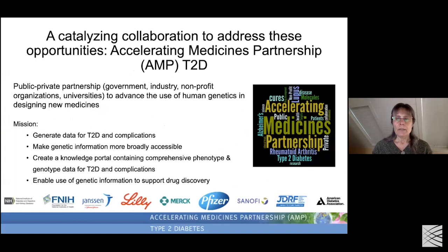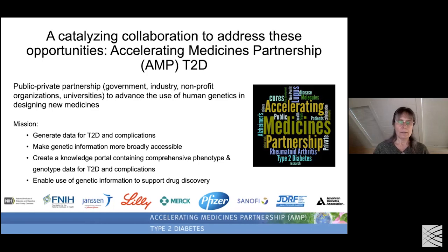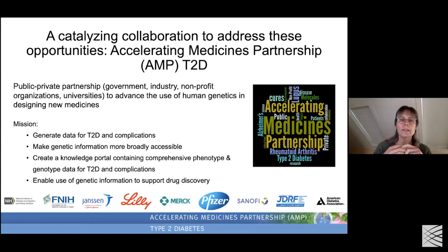In about 2014 to 2015, a collaboration started to address this issue - the Accelerating Medicines Partnership in Type 2 Diabetes. It's a public-private partnership involving NIH, the Foundation for the National Institutes of Health (FNIH), pharmaceutical companies, the Broad, and institutions such as University of Michigan and University of Oxford. The mission was to generate genetic association data for T2D and its complications, and through the portal to make this information more broadly accessible. The ultimate goal was to speed up drug discovery.